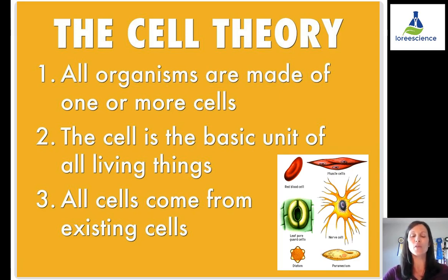The cell is the basic unit of all living things. Even though it's made up of smaller components, those components on their own cannot meet the seven characteristics of life. Therefore, the cell is the smallest thing that can be considered alive.